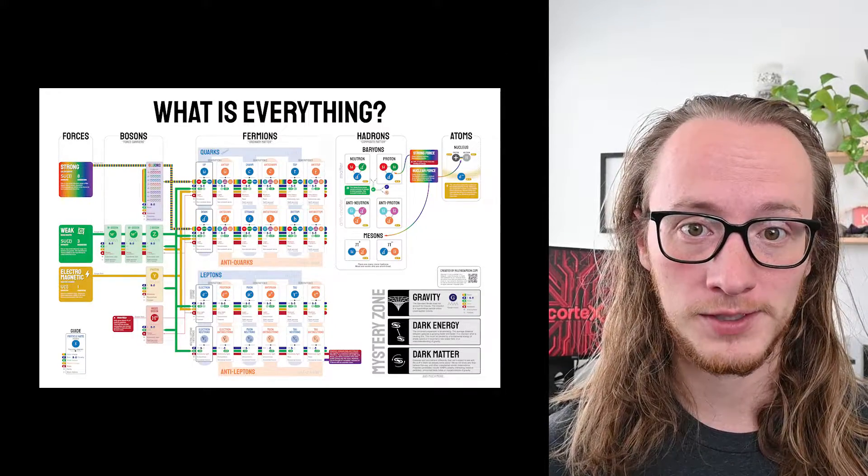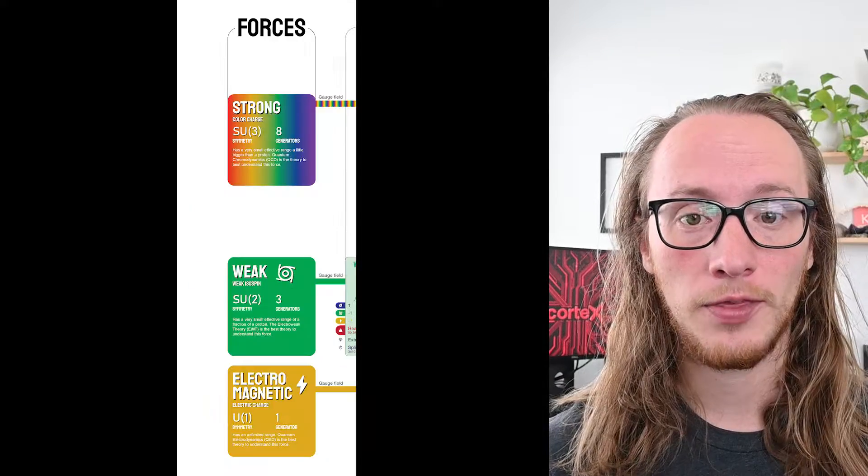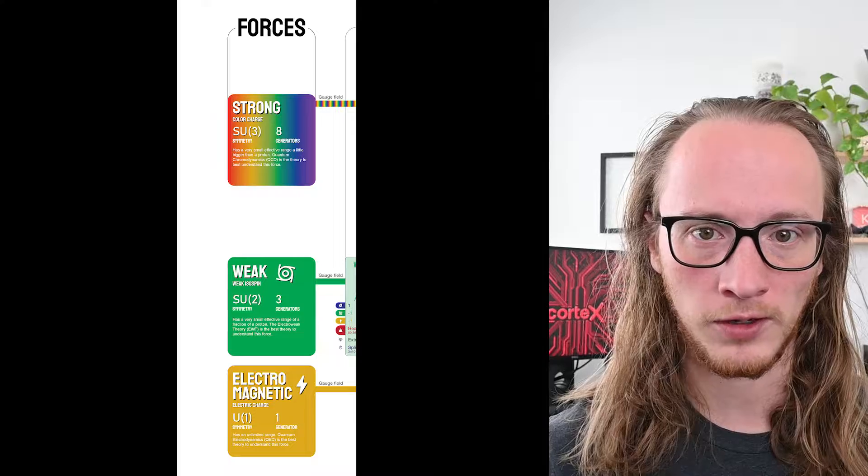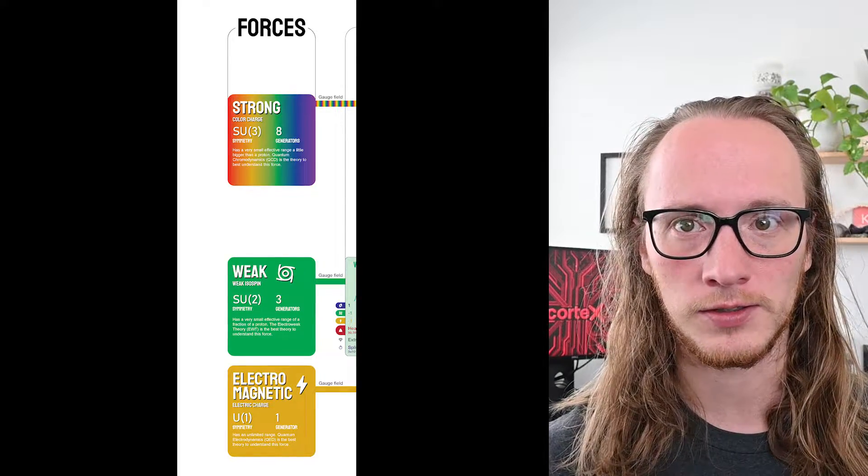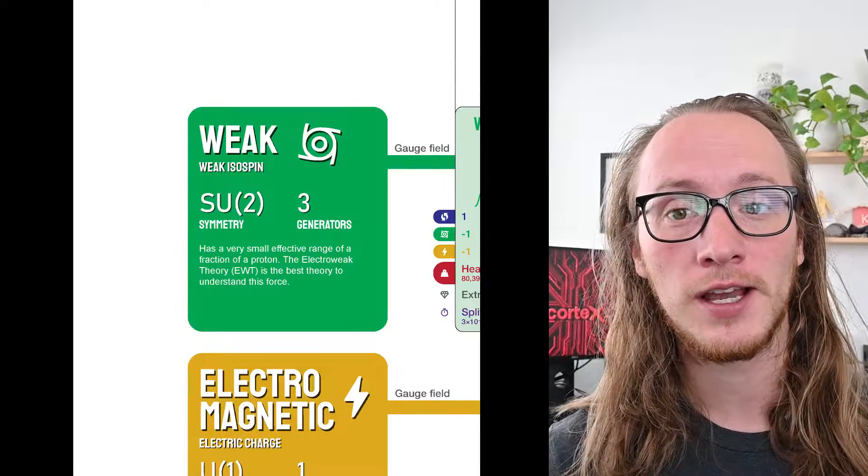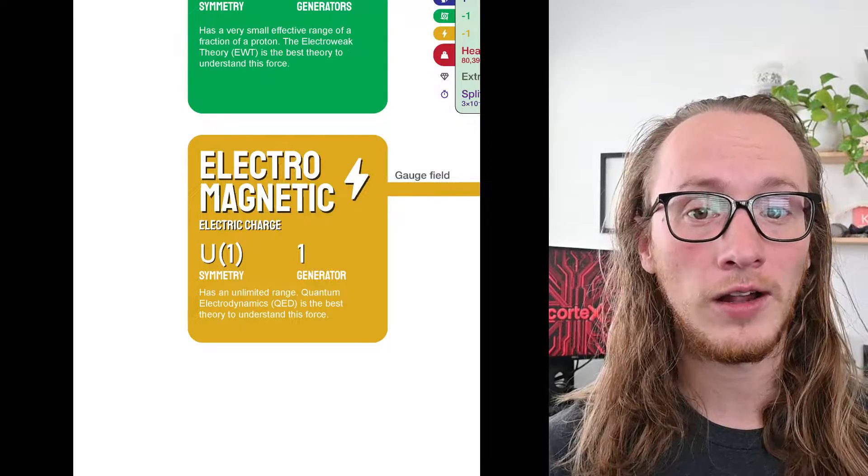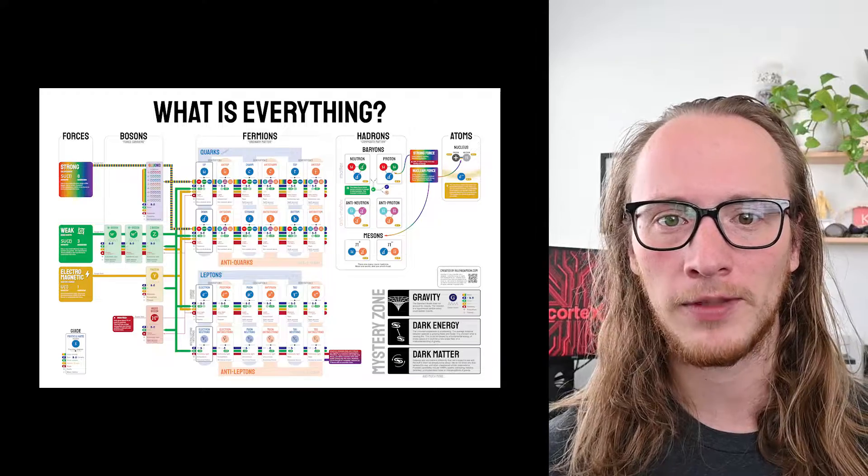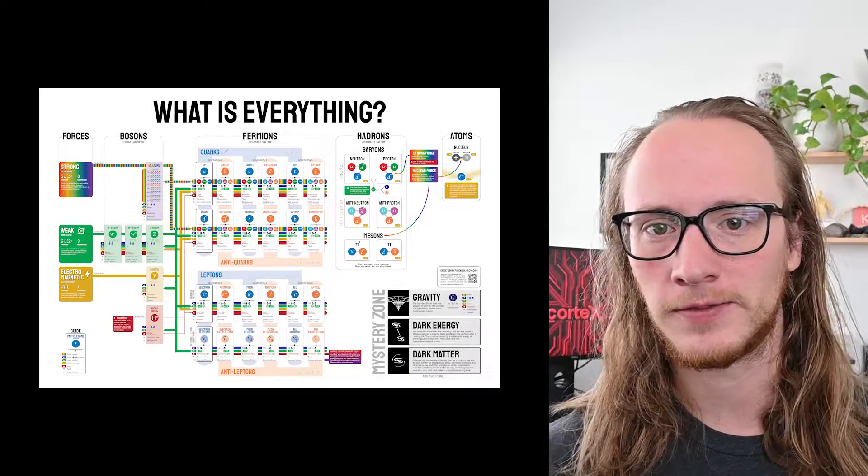There are four fundamental forces that we know of today. Three of them we have a good description of how they interact with the quantum world, the very very small particles. Those are the strong force, the weak force, and electromagnetic force. They all have different symmetries, which is basically a rulebook of how they can interact with the rest of existence.